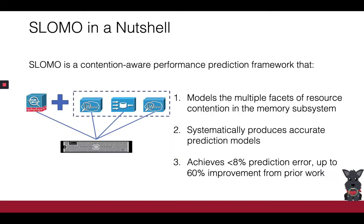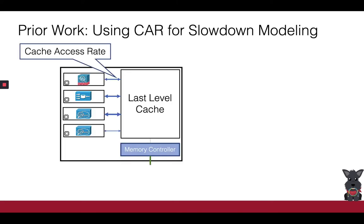Our work, SlowMo, is a contention-aware performance prediction framework that addresses that question. SlowMo leverages a data-driven understanding of contention to build efficient performance prediction models for any target NF. SlowMo is accurate, with its average prediction error being less than 8%, which can be up to 60% better than the error of prior work.